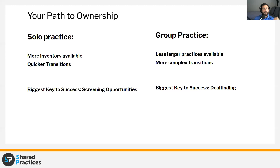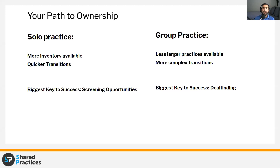Once you decide on what track you want, you figure out how to get there. A solo practice owner has a lot more inventory — about 80% of practices available are probably good fits for a solo: four ops, something like that, maybe six. These are also quicker transitions because it's a one-doctor show — you're just swapping out old doctor for new doctor. There's not a big co-working transition; it's usually a smaller office. Group practice transitions have a lot more nuance — often the seller stays on, sometimes an associate is already there.